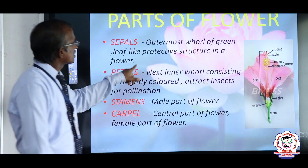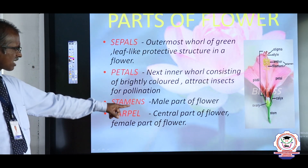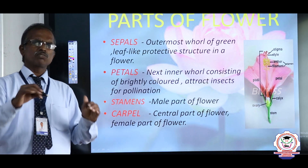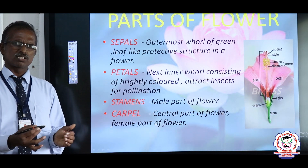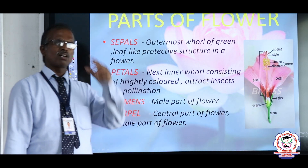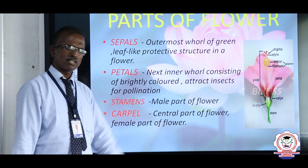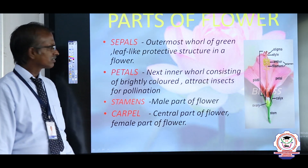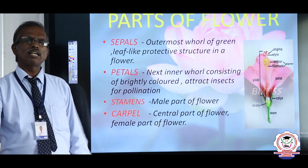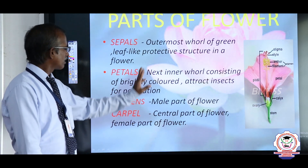Now, the parts are sepals, petals, stamen, and carpels. If any flower bears all these structures, that flower is called a complete flower. Hibiscus is an example of a complete flower. If one or two parts are absent, then that flower is known as an incomplete flower.